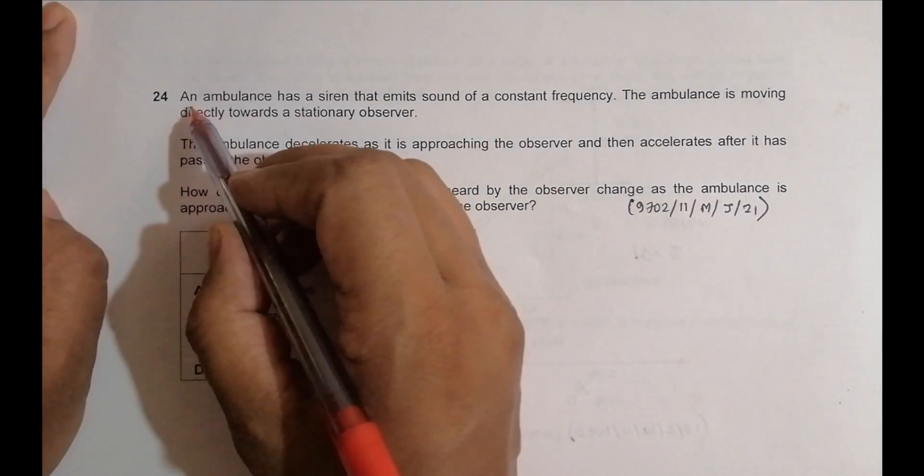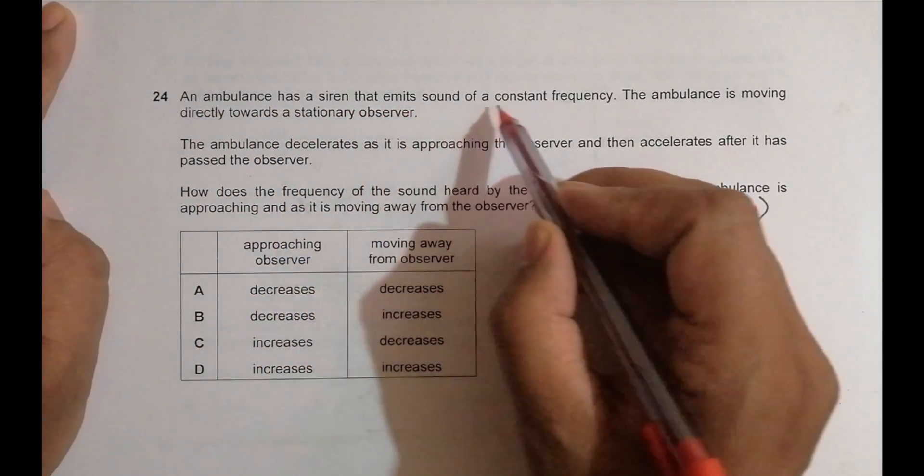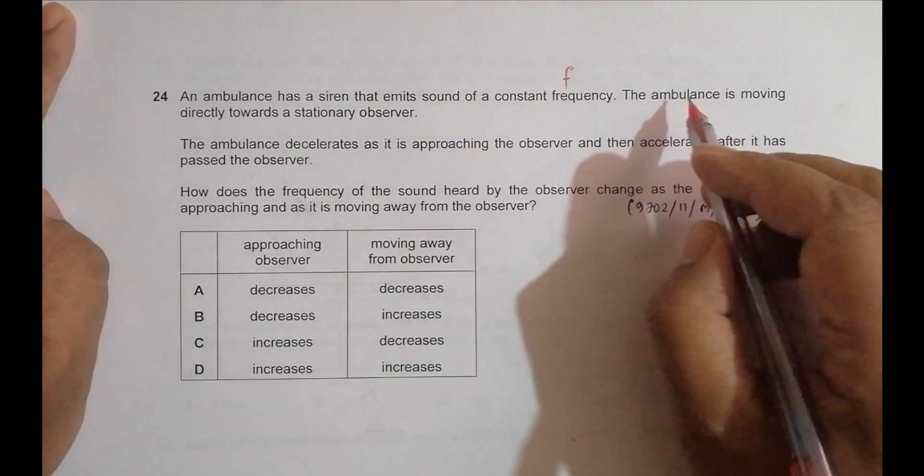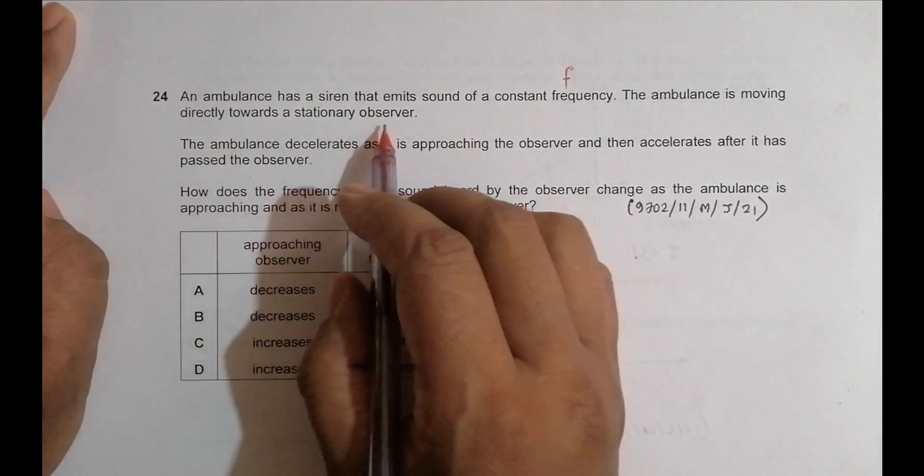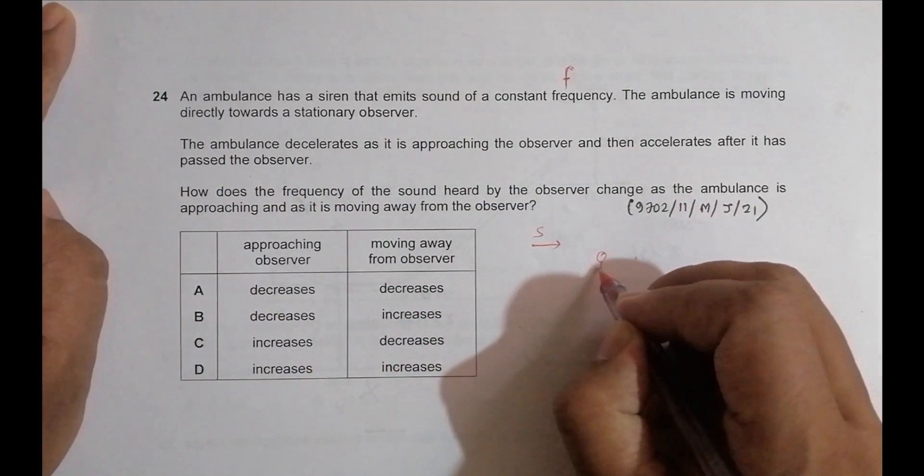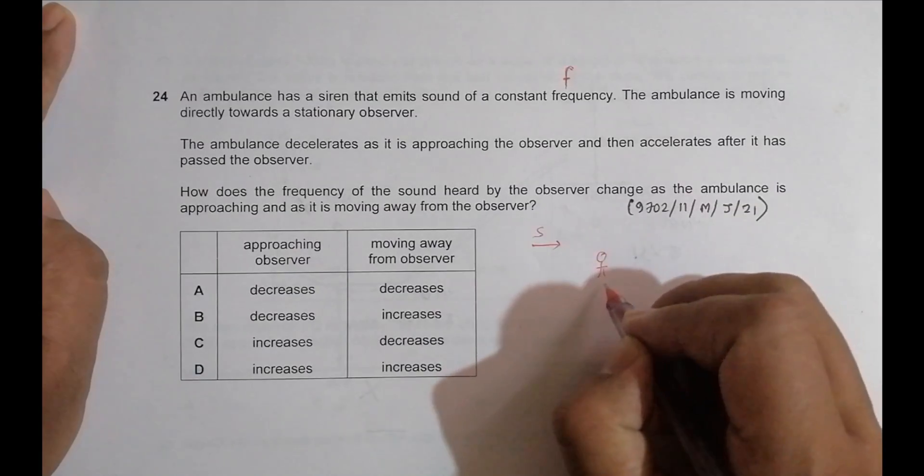So it says that an ambulance has a siren that emits the sound of a constant frequency. So this is f small f here. The ambulance is moving directly towards a stationary observer. So it is coming from here. This is the source. This is the observer or listener which we call as L.